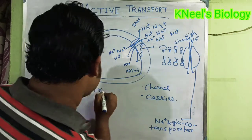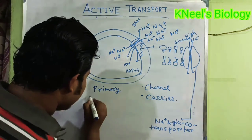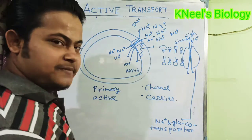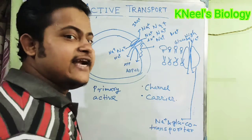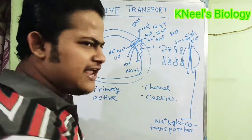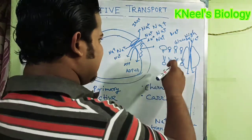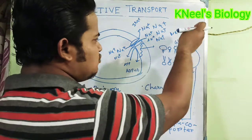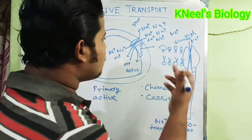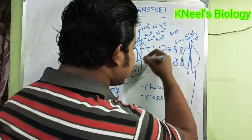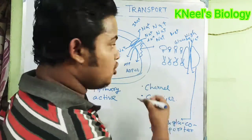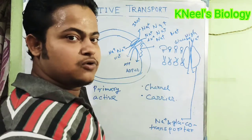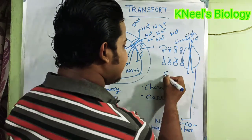This is the primary active transport, and the sodium-glucose co-transport process is the secondary active transport. Although it looks like a passive transport — because no direct energy is used and sodium moves from higher to lower concentration — it is not passive. It is the result of the sodium-potassium ion transport driven by primary active transport. Hence, this is called the secondary active transport.